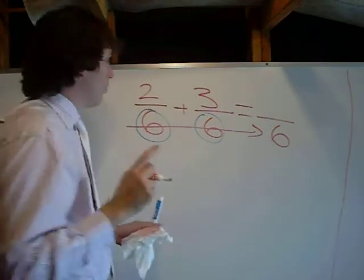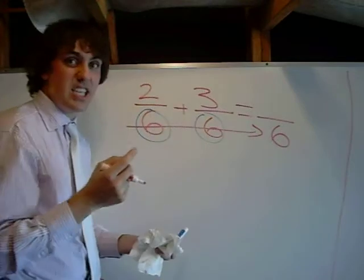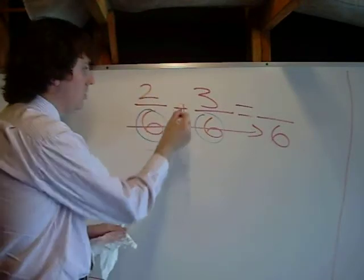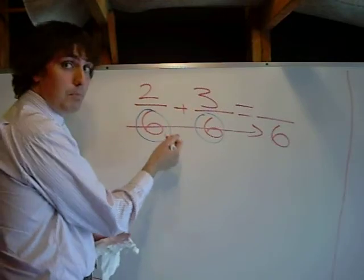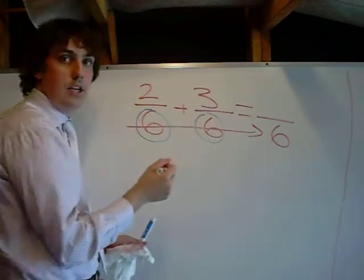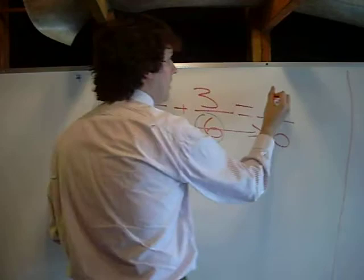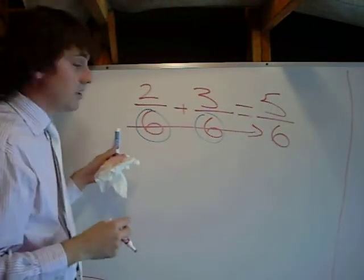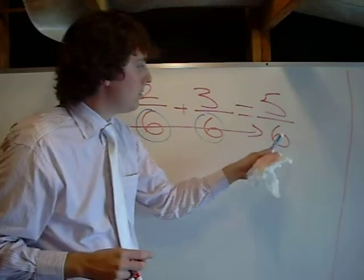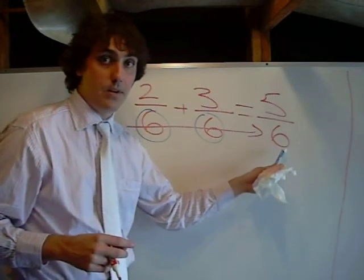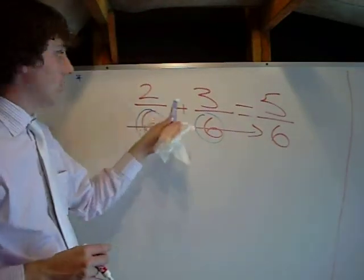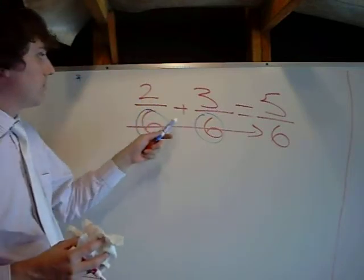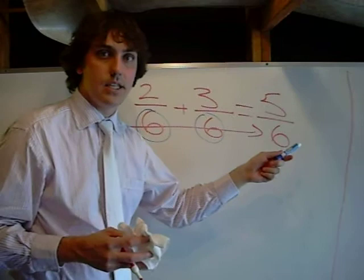Now, what you do with the numerators is something pretty easy, too. All you do, you take this first one, so 2, do whatever this sign says. In this case, it's plus. So 2 plus 3. 2 plus 3 is 5. So the moral of the story is, if the denominators are the same, you just immediately put over the denominator on the bottom of your answer, and then you add or subtract the tops, the numerators. Right? So 2/6 plus 3/6 equals 5/6. Cool?